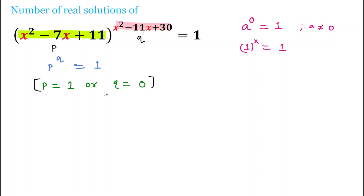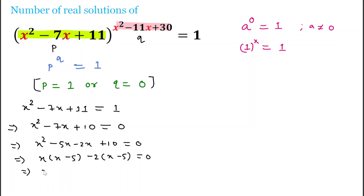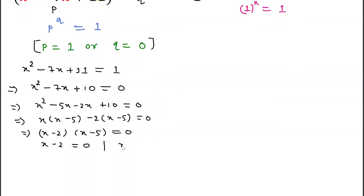Solving Case 1 where p = 1: x² - 7x + 11 = 1, which gives x² - 7x + 10 = 0. Factoring: x² - 7x + 10 = (x - 5)(x - 2) = 0. So x - 2 = 0 and x - 5 = 0, giving x = 2 and x = 5.